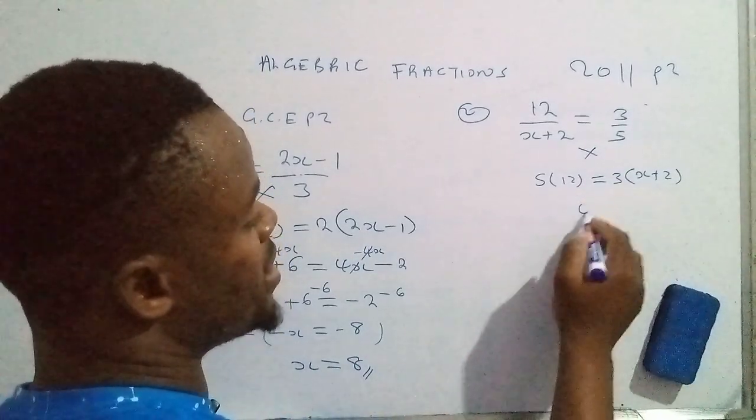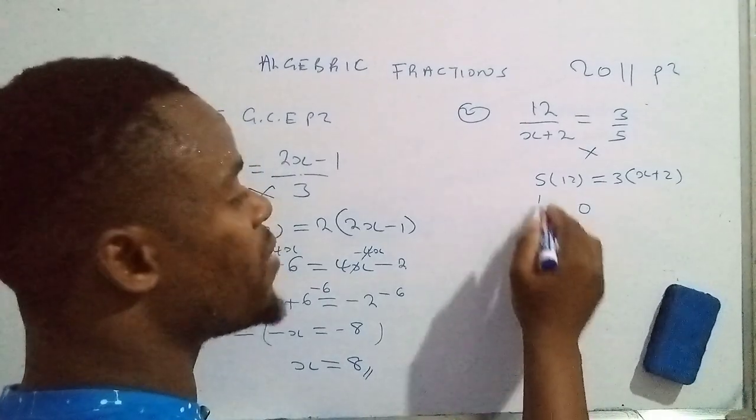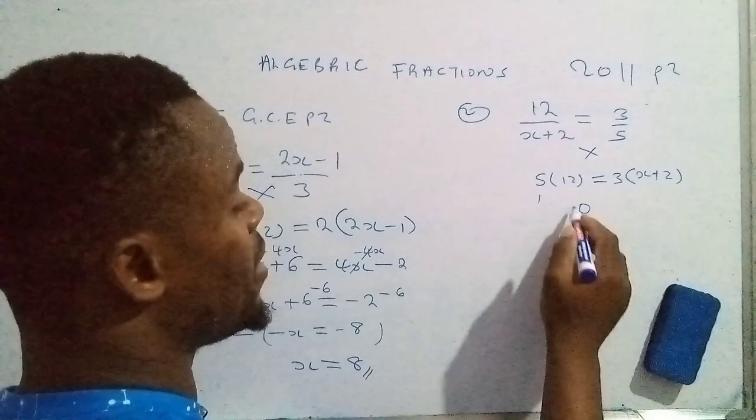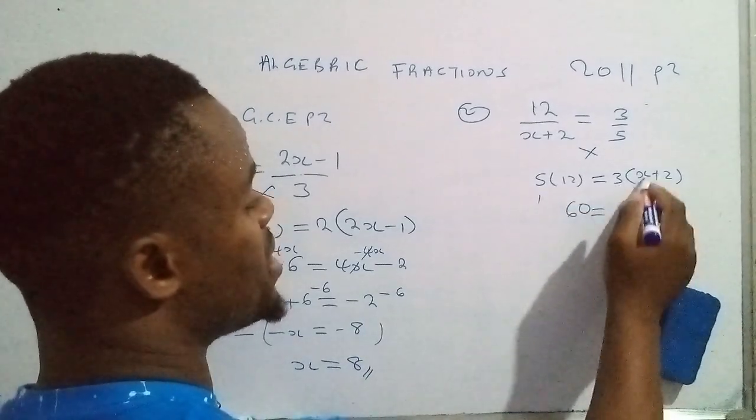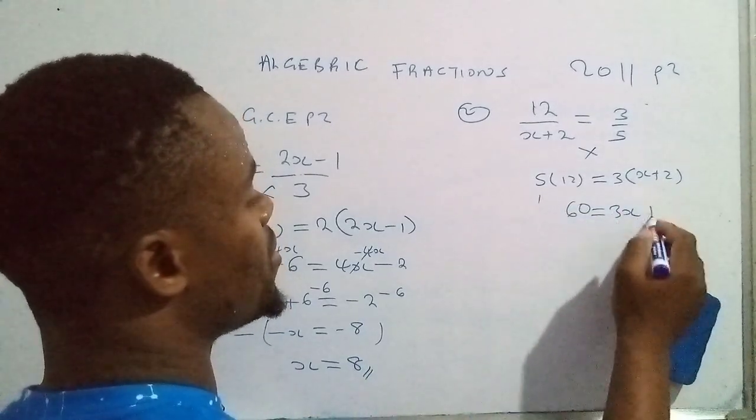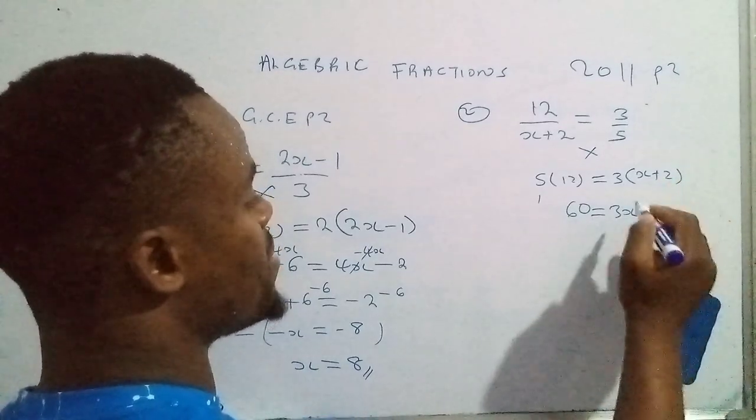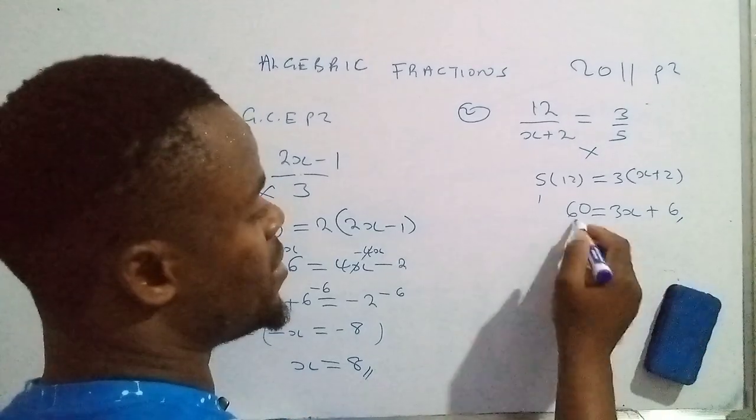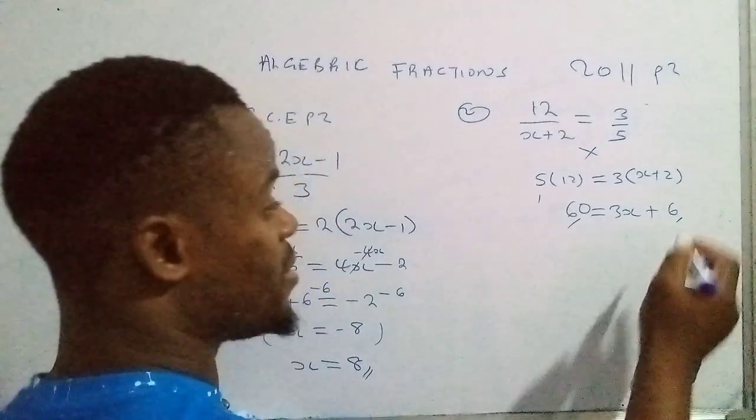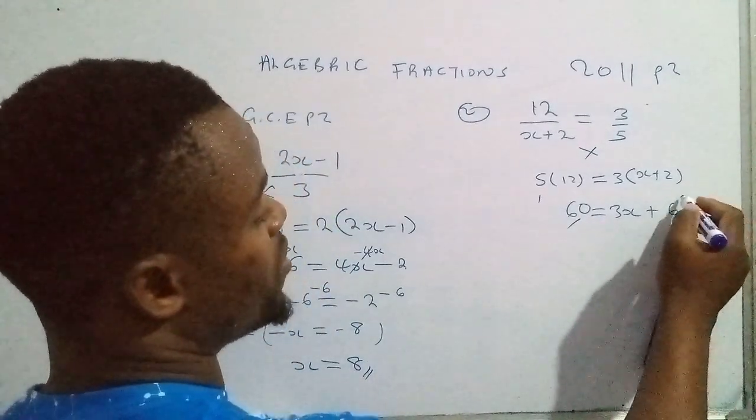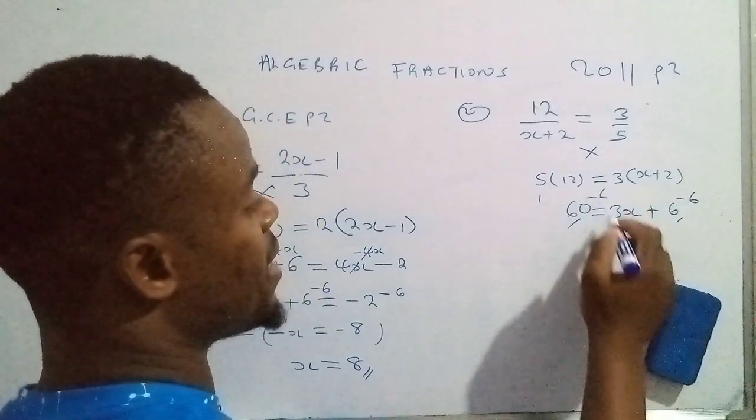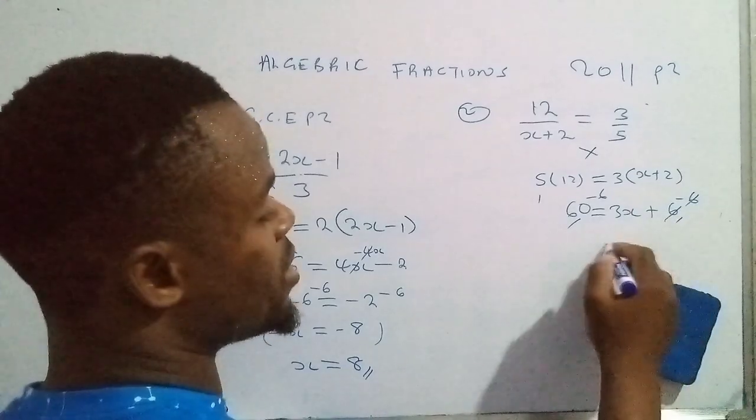So now, 5 times 2, that's 10. 5 times 1 is 5, plus 6. 3 times x plus 3 times 2, that's 6. This number and that number are like terms, so we need to get rid of this one from here by adding the additive inverse of 6 on this side. 6, this one will cancel. That'll be 3x.